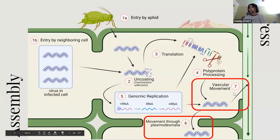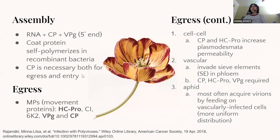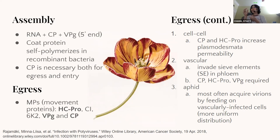Now with all this positive-stranded RNA and proteins, it's time to leave the cell. First we assemble: RNA, coat protein, VPG — the most important parts — are put together. For cell-to-cell movement, the coat protein and protease snip open holes in the plasmodesmata to make them more permeable. For long-distance movement, the virus can use the vascular system, invading the sieve elements that transport nutrients — using the coat protein, protease, and VPG to get into the vasculature, and then spreading everywhere in the plant. The third way, of course, is the aphid: if it feeds on an infected plant, the virions hitch a ride on its stylet and move on to new plants.